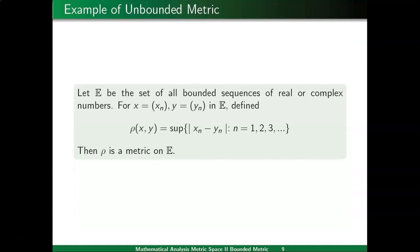Let us see if there exists a metric which is unbounded. Let E be the set of all bounded sequences of real and complex numbers. We have already discussed the metric rho xy defined as the supremum of mod x_n minus y_n, and proved this is a metric in the last lecture. It satisfies all four properties to be a metric on set E. We will now check whether this metric on E, the set of bounded sequences of real or complex numbers, is bounded or unbounded.